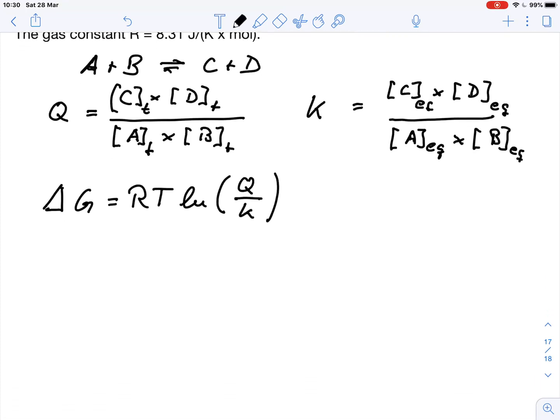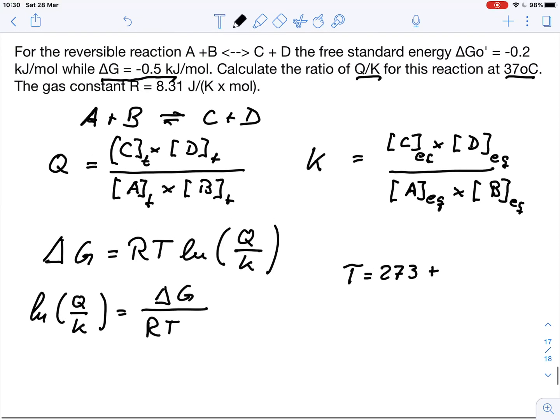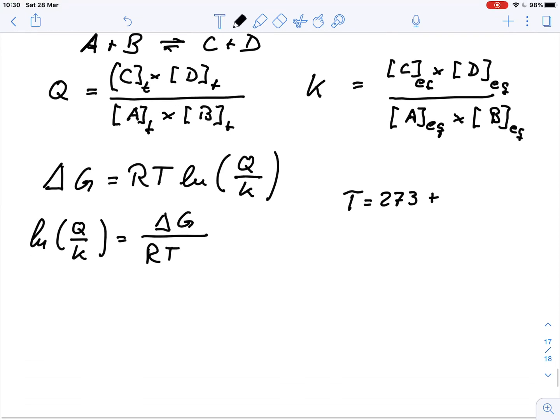All we need to do is rearrange this equation and we get ln(Q over K) equals delta G over RT. So our T, that is the temperature in Kelvin, equals 273 plus we had 37 degrees Celsius. So that gives us 310 Kelvin.